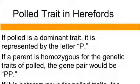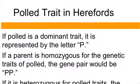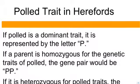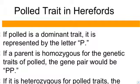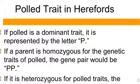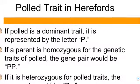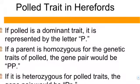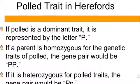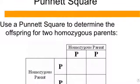Let's look at Herefords. Polled means they don't have any horns, and it's a dominant trait, represented with a capital P. If the parent is homozygous for the genetic trait of polled, it's big P, big P. If it's heterozygous for polled, it's big P, little P.